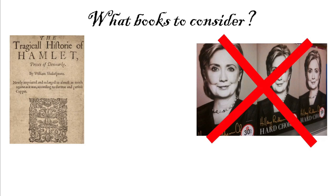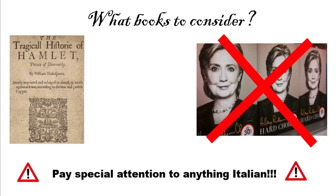Think about books that would logically appear in an English class for high school or middle school students — these are the types of books you should study. I've actually written down a bunch of authors to make this easier for you, so once you're done with this video, look at those authors. A quick note: the list is obviously not exhaustive. Also, a very important piece of advice: if there is any Italian author, pay special attention to that — anything Italian gets priority across the whole general knowledge section. If you yourself are Italian you have an advantage, but if not, learn about the Italian authors.